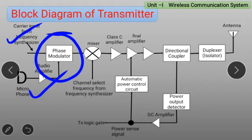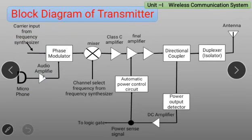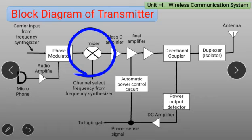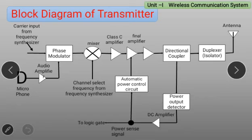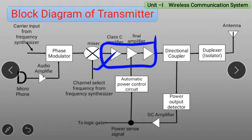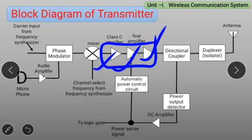The mixer performs up-conversion using a local oscillator frequency from the frequency synthesizer to up-convert the signal to the final transmitter frequency. The amplifier stage — a cascade of amplifier stages — then amplifies the signal, with the final amplifier delivering 3 Watts of power.